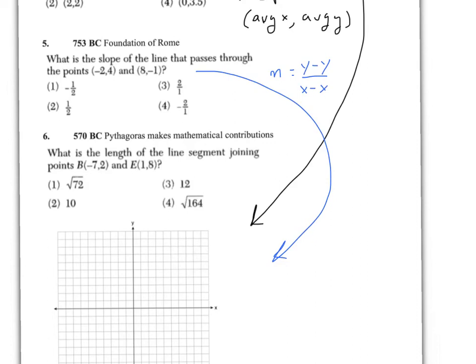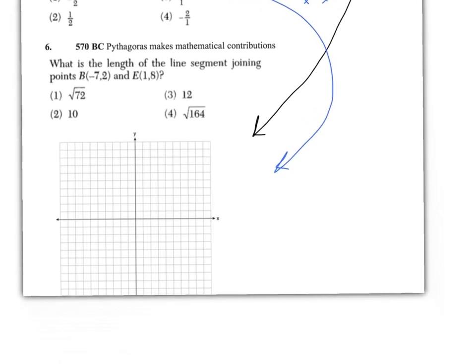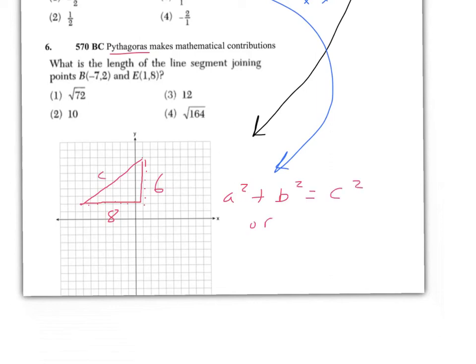For question six — 570 BC, Pythagoras makes mathematical contributions. It's not surprising that I made this a question where you could use the Pythagorean theorem. The safest way to lay this one out is to make a right triangle out of the picture with points (−7, 2) and (1, 8). Then use the Pythagorean theorem to find out how long that diagonal distance is. Count the sides: it's a 6 by 8 right triangle. You could use the Pythagorean theorem to find the missing side, or that Pythagorean trick to get there faster, or the distance formula.